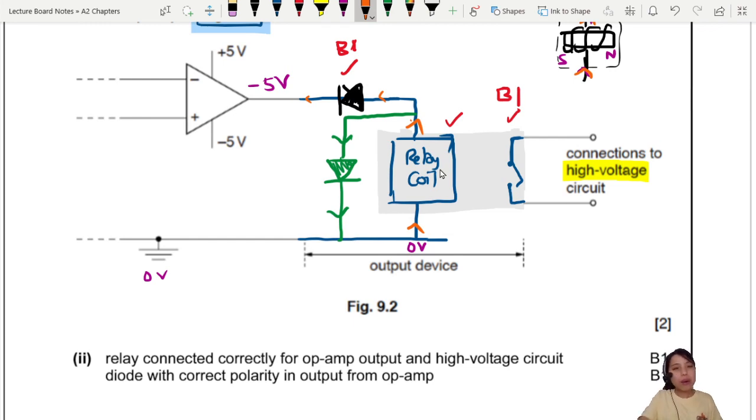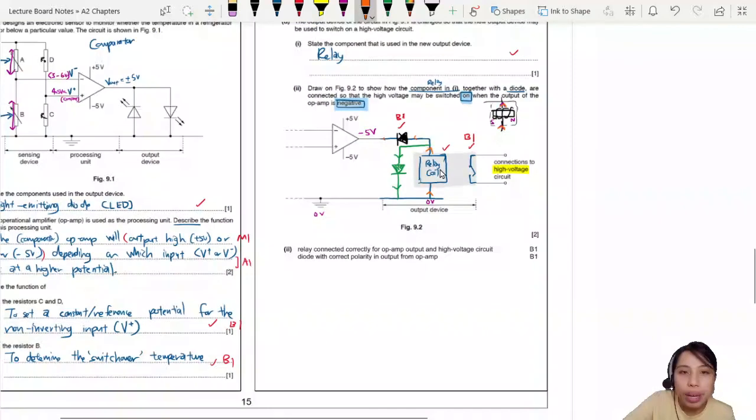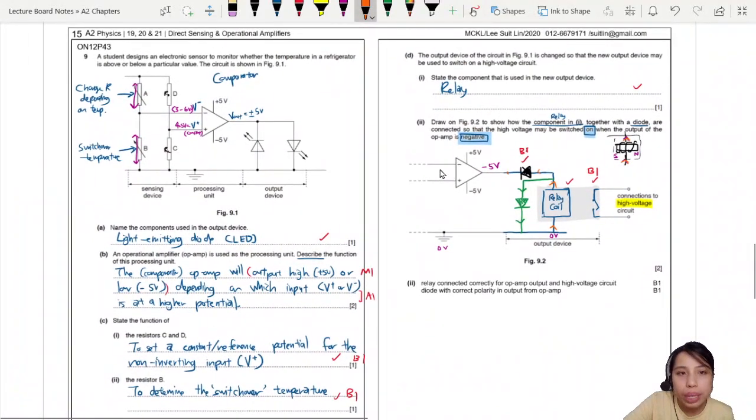I think that's it. Pretty fast. So make sure you know how to explain what is happening in this comparator op amp circuit. How to think about all this potential changing. And also how to draw relay outputs for all these kind of comparator circuits. So that's all for this question. I will see you in the next example or theory video. Bye bye.